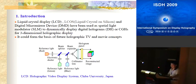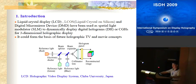As we know, liquid crystal display, liquid crystal on silicon, and digital micromirror device have been used as spatial light modulators to dynamically display digital holograms or computer-generated holograms for three-dimensional holographic display. This could form the basis of future holographic TV and movie concepts.